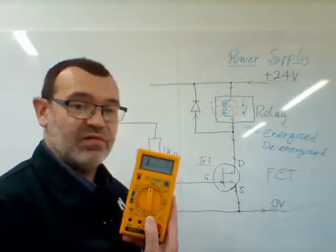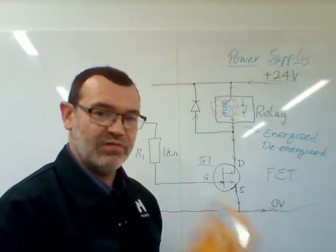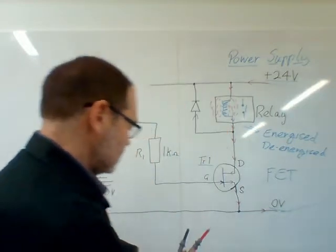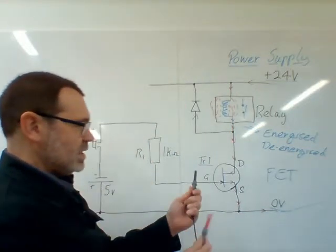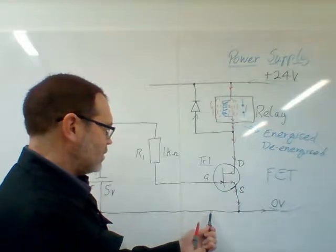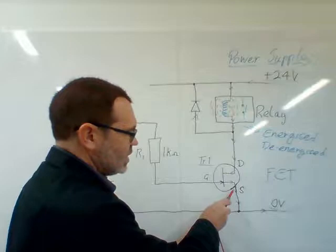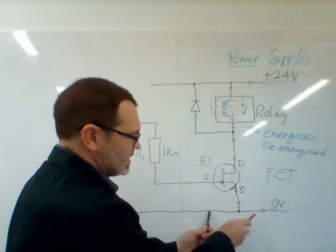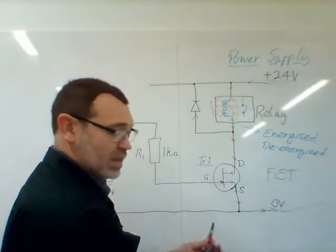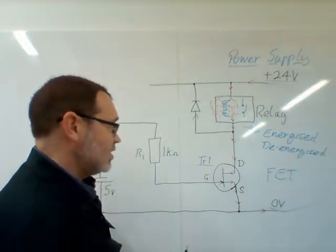If we were to take a meter and measure the voltages around the circuit, this is what we would get. Handily enough, I have a meter here just for that purpose. Let's put the zero volt probe on zero volts and measure the voltage on the source. The source is connected to zero volt line, so I'm going to measure zero volts.